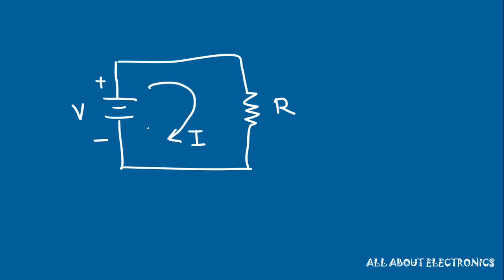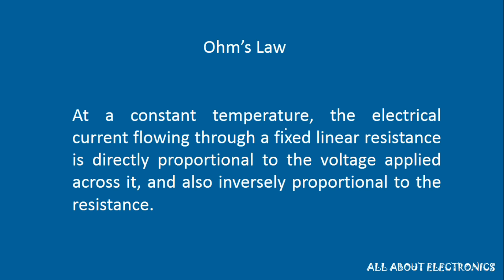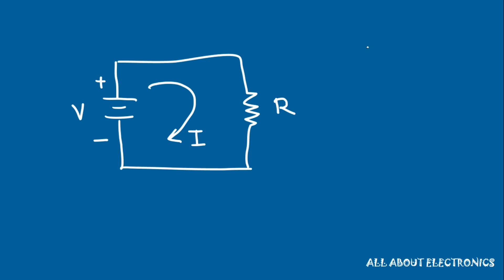Let's say we have one voltage source which is connected to one resistor R. Because of that, the current will flow through this resistor R. According to Ohm's law, at constant temperature, the electrical current flowing through a fixed linear resistor is directly proportional to the voltage applied across it and inversely proportional to the resistance.